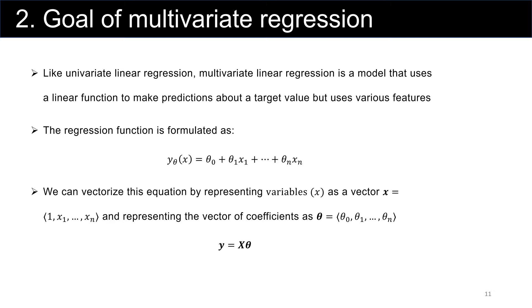Similar to univariate linear regression, multivariate linear regression is also a model that uses a linear function to make predictions about the target value. But instead, it uses various feature functions. In the previous one, we had one feature function, but here we have various features.